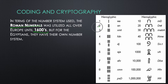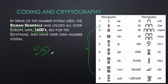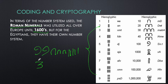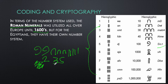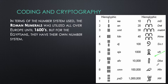Before Fibonacci, everyone in Europe was using Roman numerals. But Egyptians had their own number system. For instance, something like this would equal 235 — two scrolls, three heel bones, and five sticks. For one thousand they used the lotus flower, ten thousand the pointing finger, one hundred thousand a toad (some books use a fish), one million an astonished man, and ten million the rising sun.